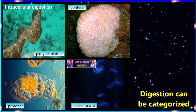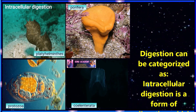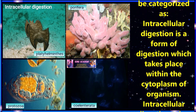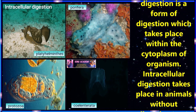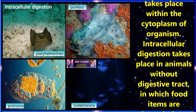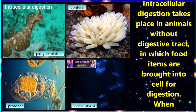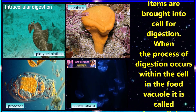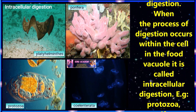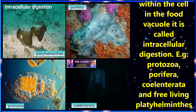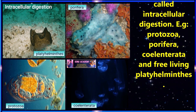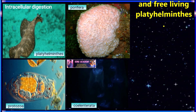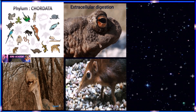Digestion is categorized into two types: one is intracellular digestion and second one is extracellular digestion. Intracellular digestion is a form of digestion which takes place within the cytoplasm of organisms. Intracellular digestion takes place in animals without a digestive tract, in which food items are brought into cells for digestion. When the process of digestion occurs within the cell in the food vacuole, it is called intracellular digestion. Examples of intracellular digestive systems include organisms such as protozoa, porifera, coelenterata, and free-living platyhelminthes.